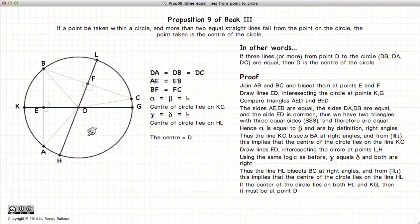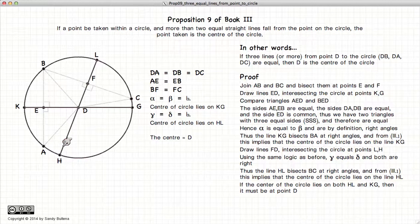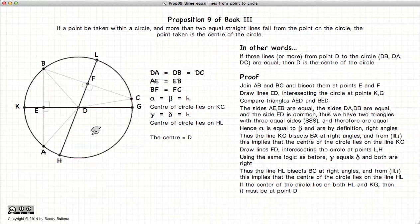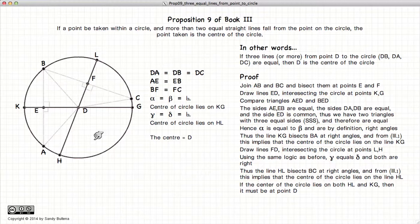So we have demonstrated that if you have more than one line coming from a point in a circle, where these lines are all equal, more than two lines, then that point must be the center of the circle.